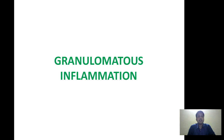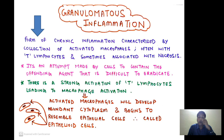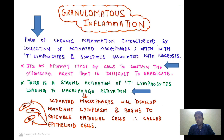Moving ahead to a very important exam topic: granulomatous inflammation. What is granulomatous inflammation? It is a form of chronic inflammation characterized by a collection of activated macrophages, often with T lymphocytes, and sometimes associated with necrosis. It is essentially an attempt by cells to contain an offending agent that is difficult to eradicate. There is strong activation of T lymphocytes leading to macrophage activation. Once activated, macrophages develop abundant cytoplasm and begin to resemble epithelial cells, and are therefore called epithelioid cells.